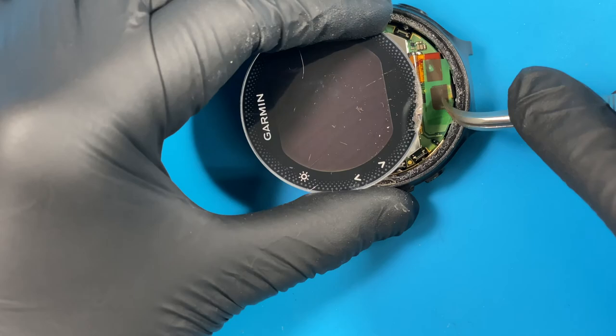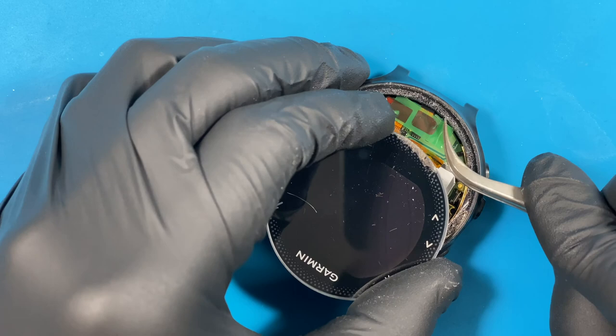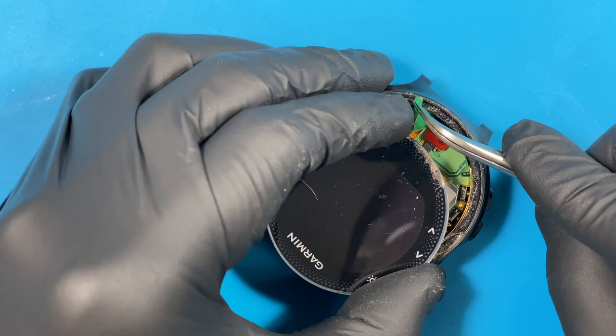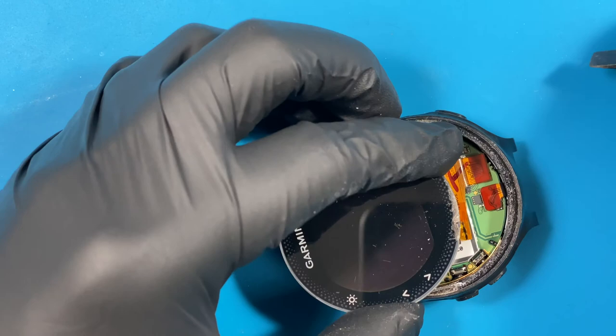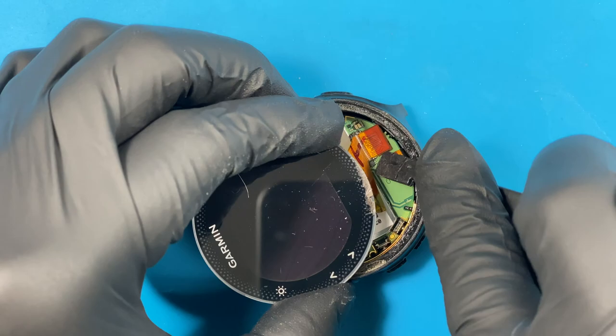It's pretty straightforward. Now remove this little piece of adhesive that's holding down the connector for the LCD. Now that we've removed this little piece of tape, we can begin unplugging the LCD connector.